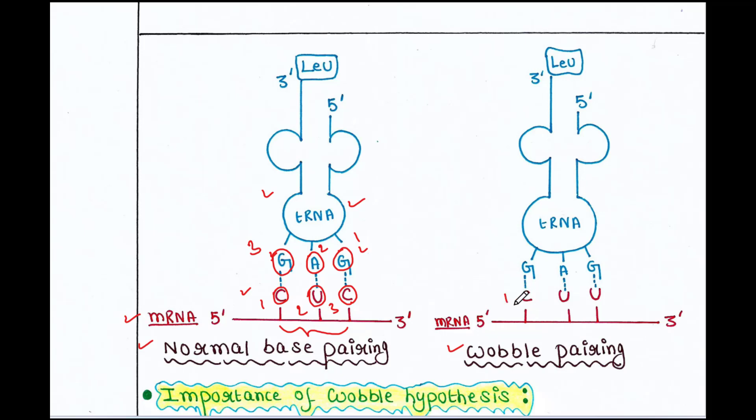The first nucleotide of codon and second nucleotide of codon pair with usual nucleotides of anticodon. That is the complementary base pairing. C pairs with G and U pairs with A. But in this case, you can see that the third nucleotide of the codon U, it should pair with A. This is the complementary base pairing. But in this case, this U pairs with G.